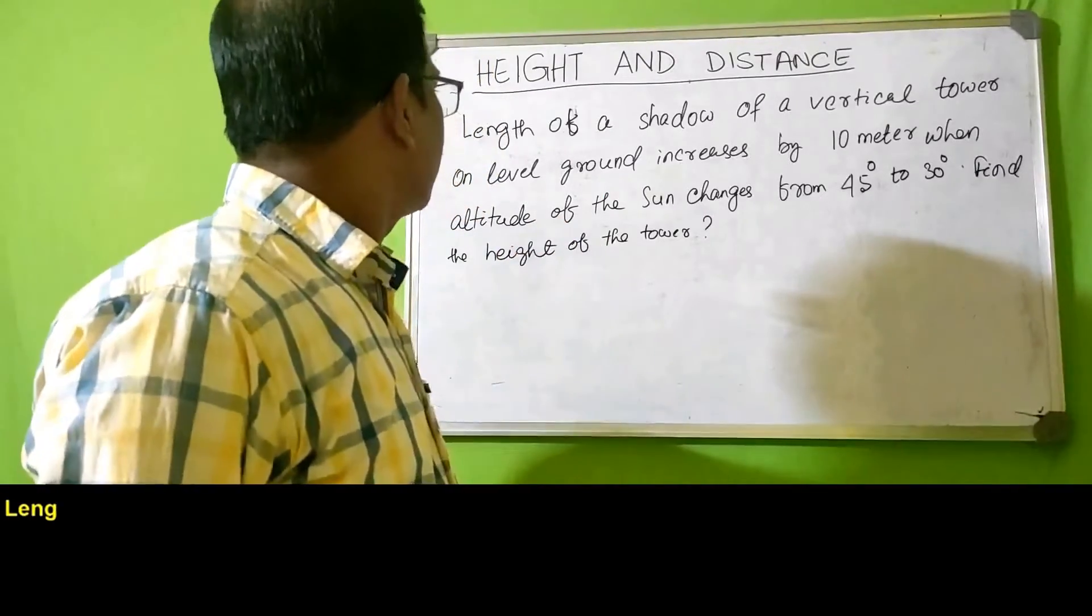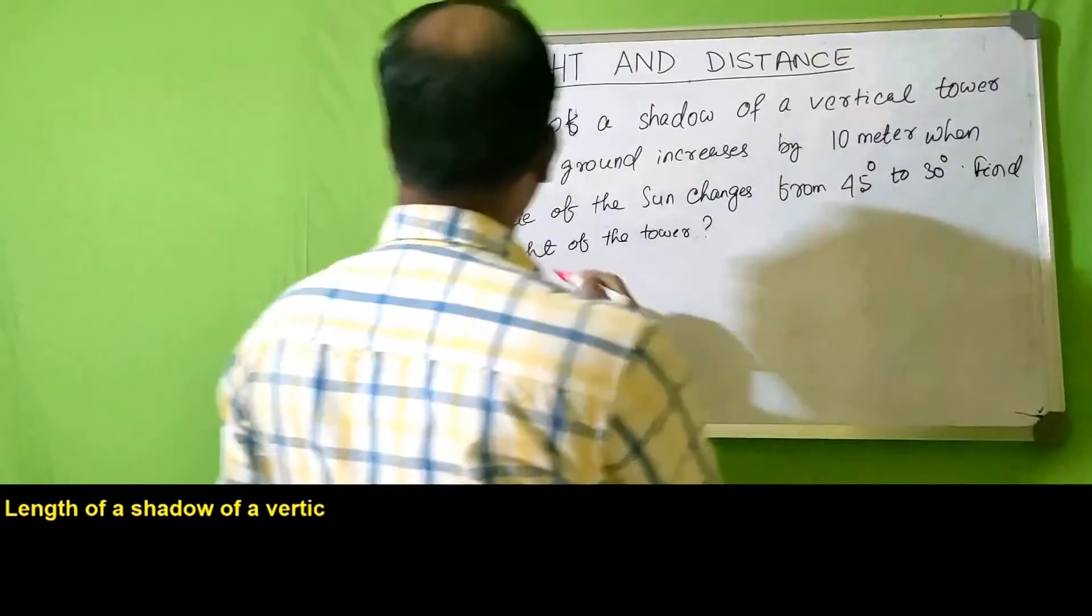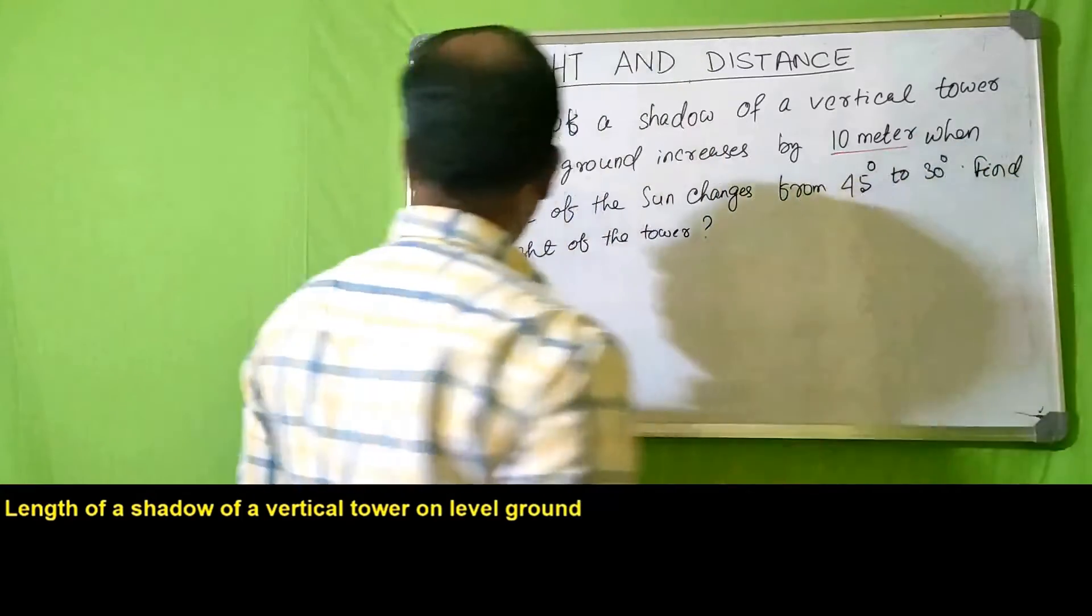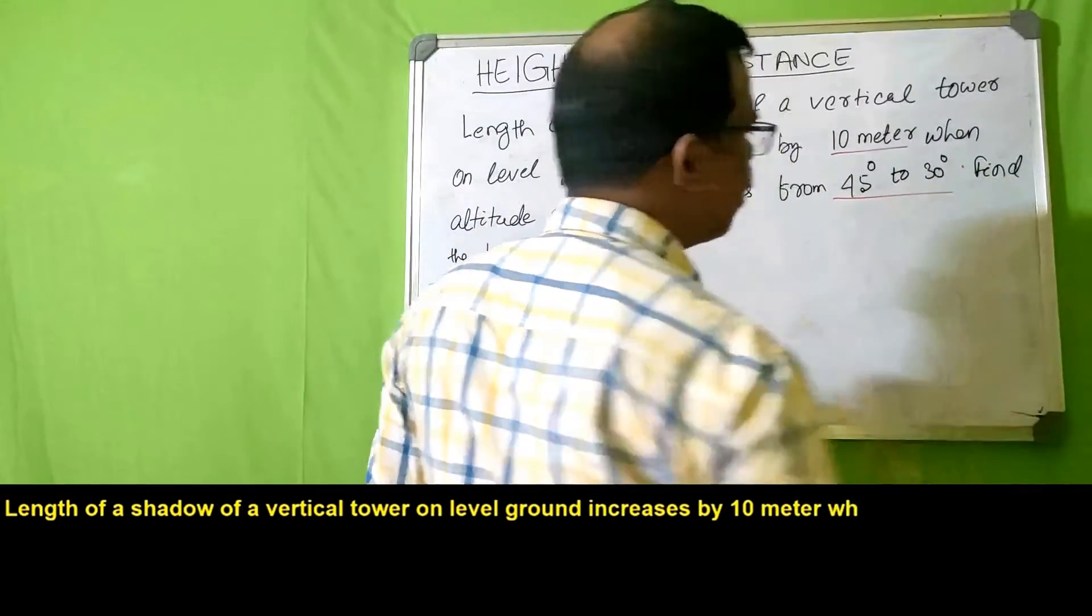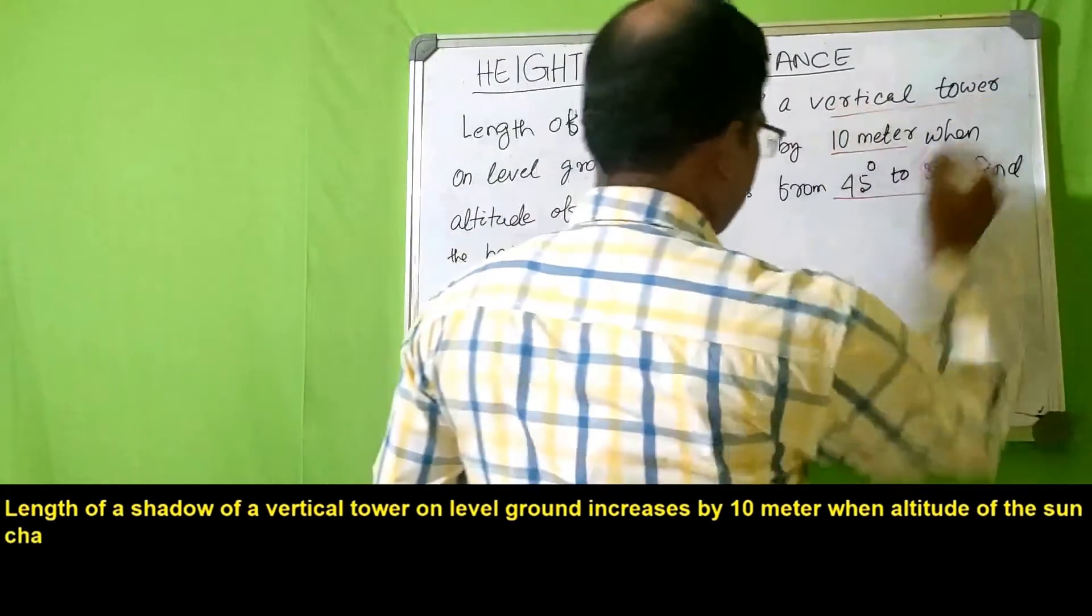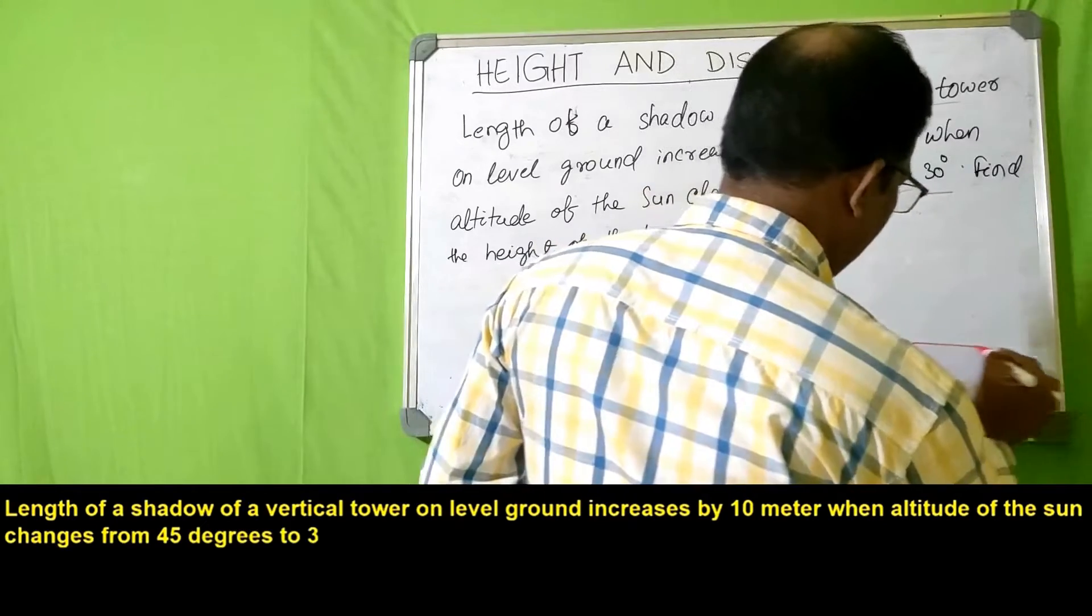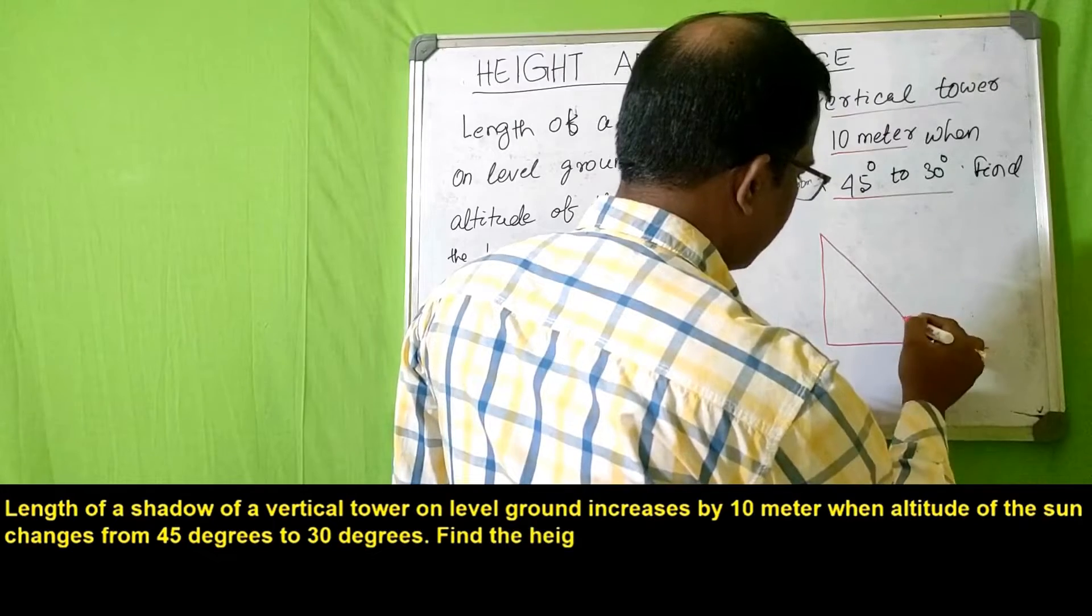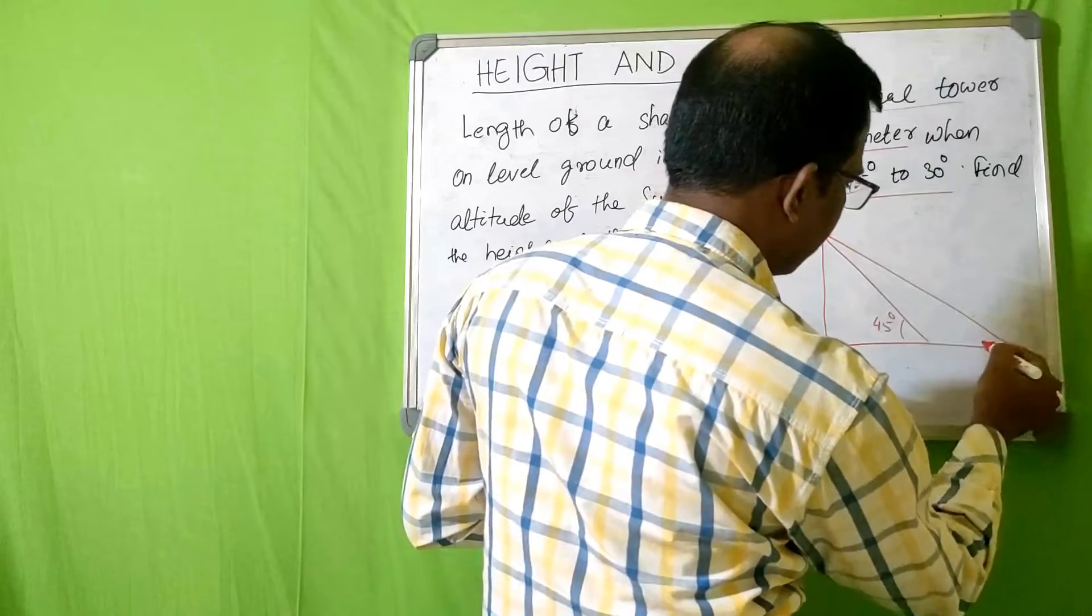Here is the problem: length of a shadow of a vertical tower on level ground increases by 10 meters when the altitude of the sun changes from 45 degrees to 30 degrees. That means the vertical tower is standing here and the shadow is falling on the ground. One is given as 45 degrees, the other one is given as 30 degrees.